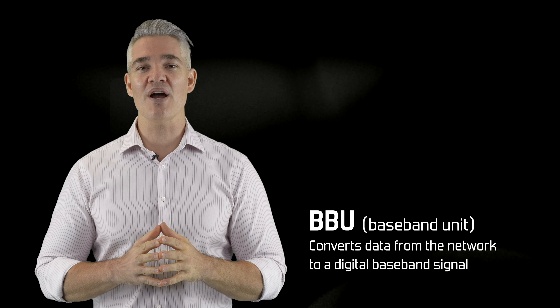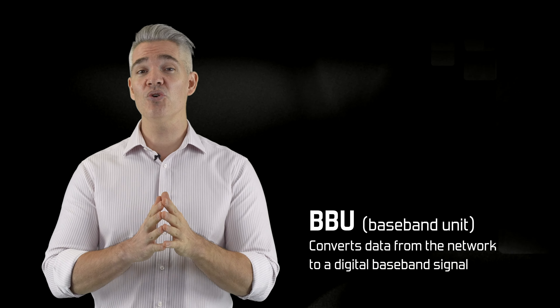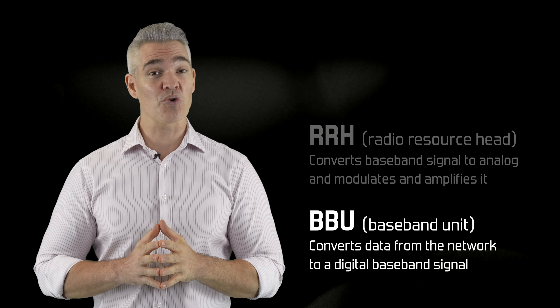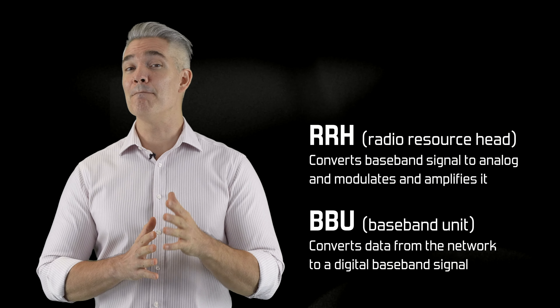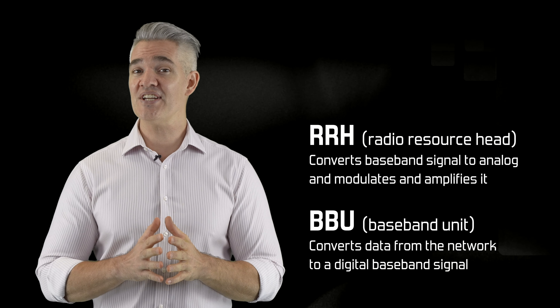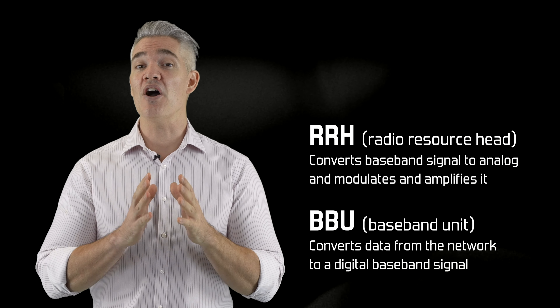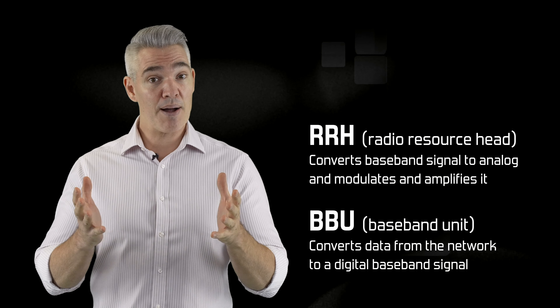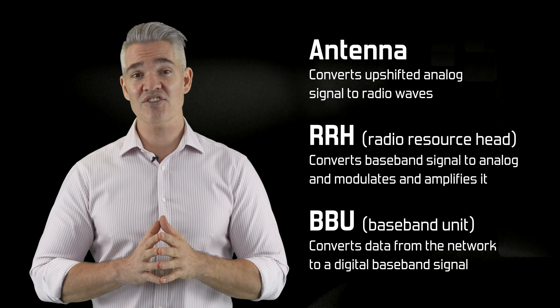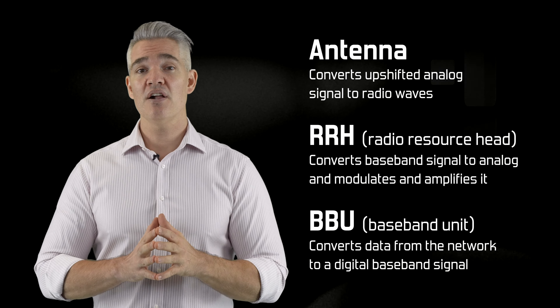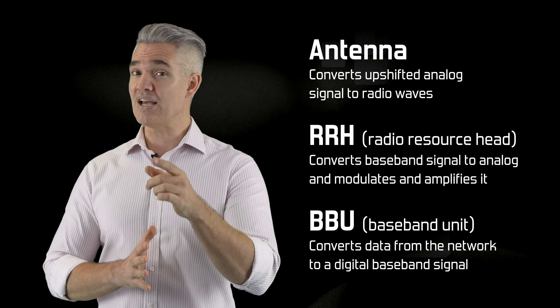In a nutshell, the radio access network typically consists of three components. The baseband unit is where data from the core network is converted into a digital baseband signal. The radio resource head, formerly known as the Radio Resource Unit or RRU, takes that baseband signal, converts it to analog, modulates it up to a frequency that the operator is allowed to use, and amplifies it. Finally, the antenna converts the upshifted analog signal into a radio wave that can ultimately be received over the air by your device.